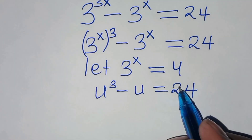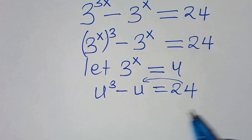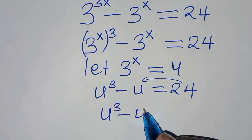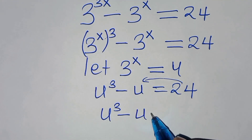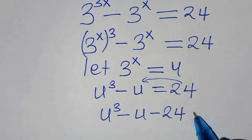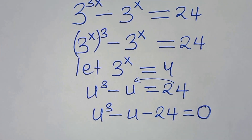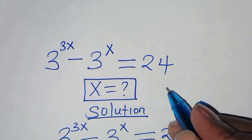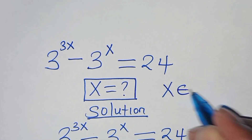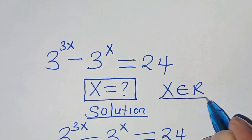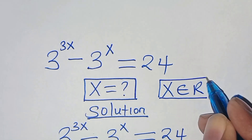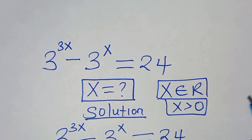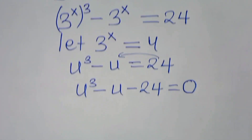Now, let's take 24 to the left hand side, so that we have u to the power 3, subtract u, subtract 24, this is equal to 0. Something we need to note here: x is a member of real numbers, and u is greater than 0. Now, let's proceed from here.